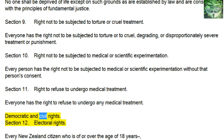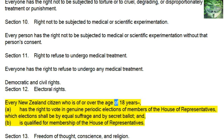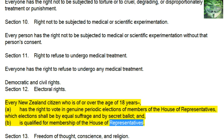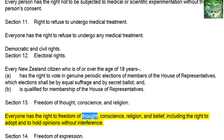Democratic and Civil Rights. Section 12, Electoral Rights: every New Zealand citizen who is of or over the age of 18 years a. has the right to vote in genuine periodic elections of members of the House of Representatives, which elections shall be by equal suffrage and by secret ballot, and b. is qualified for membership of the House of Representatives. Section 13, Freedom of Thought, Conscience, and Religion: everyone has the right to freedom of thought, conscience, religion, and belief, including the right to adopt and to hold opinions without interference.